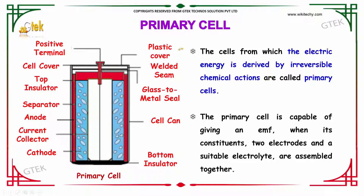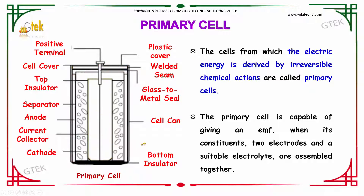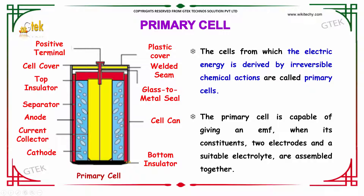This is the general principle of your primary cell. You are able to see a plastic cover on top with a positive terminal. And you got to insulate it in the back, in the bottom.